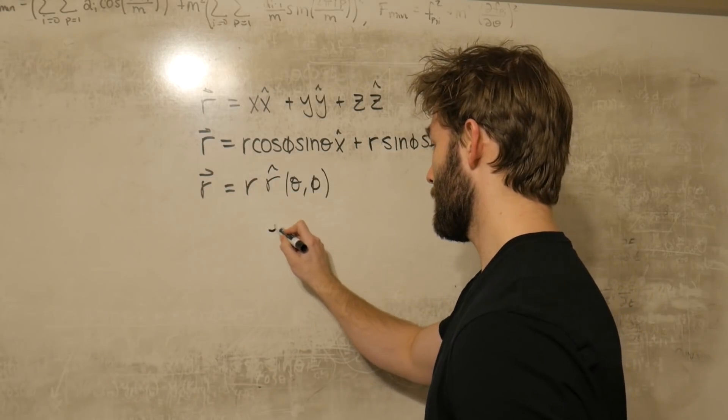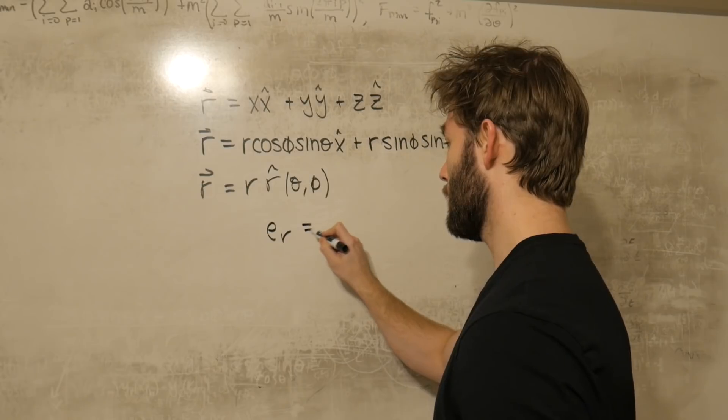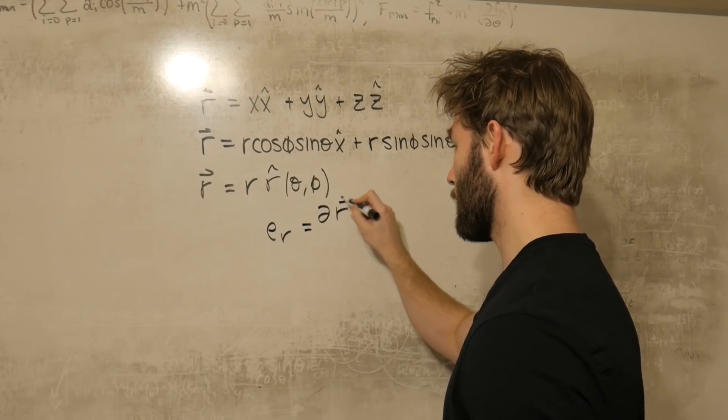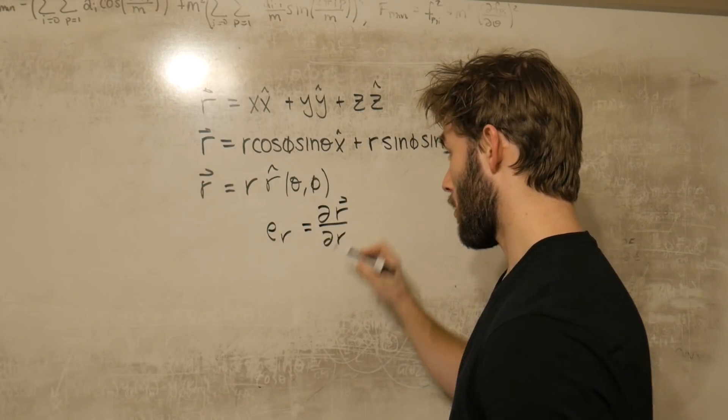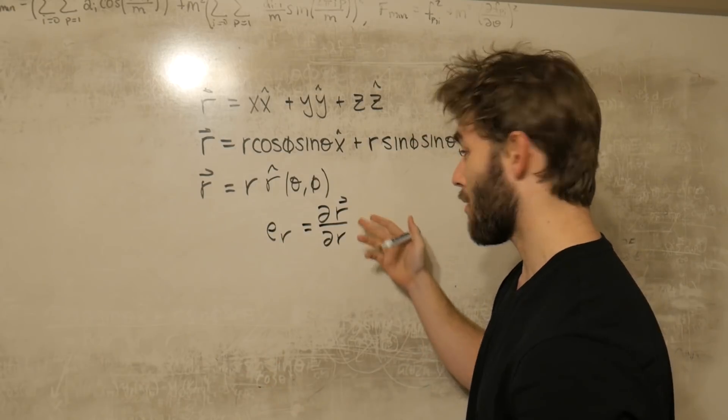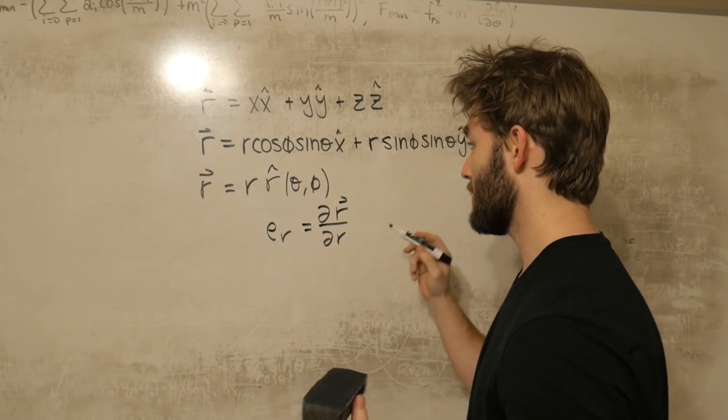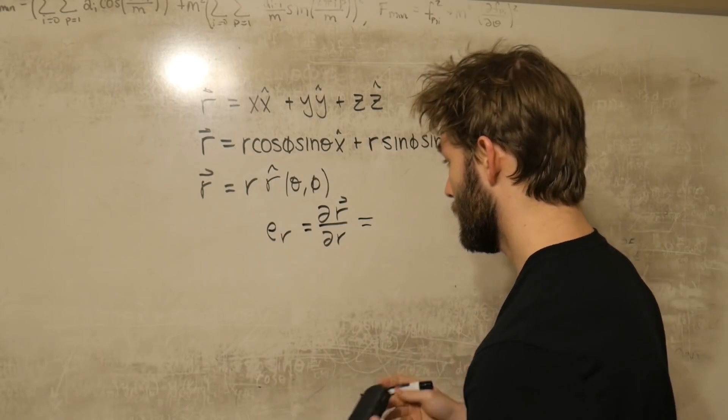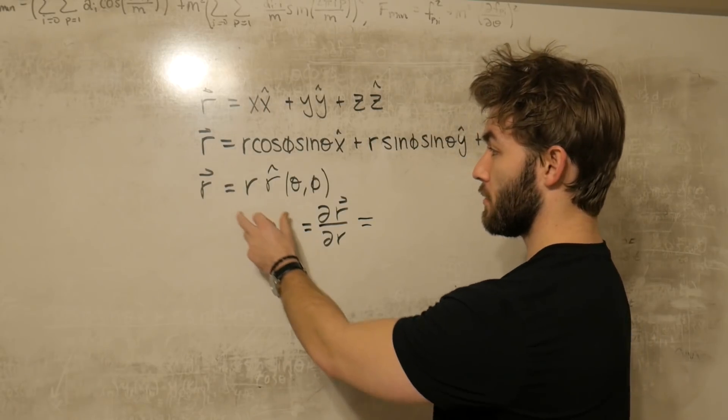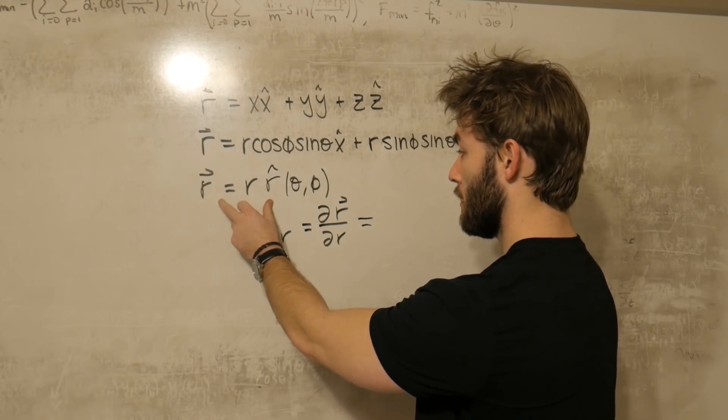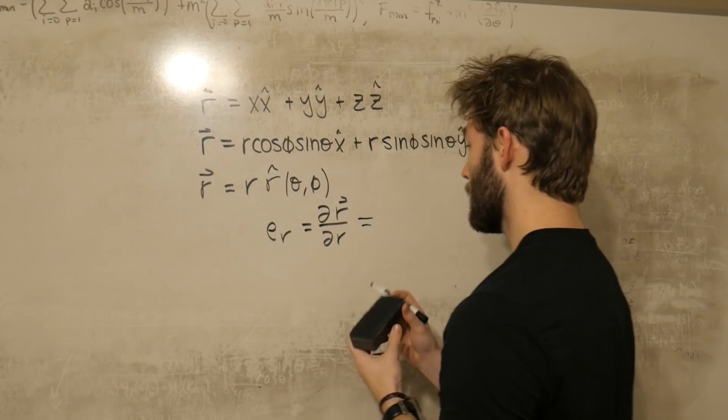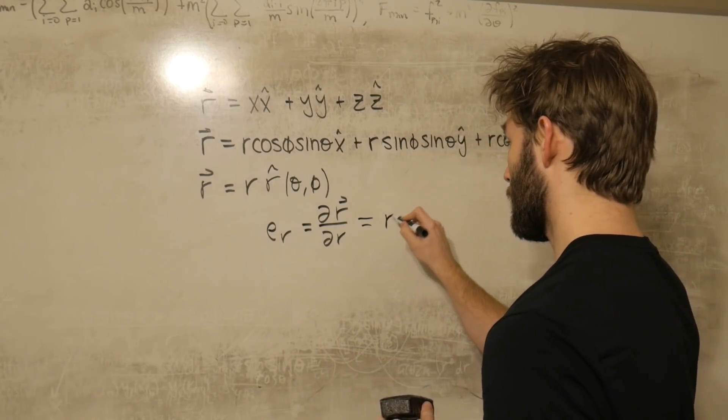So let's see what happens if we define some vector, e sub r, as a change in this r vector with respect to r. The notation's terrible because it's r and r, but let's just see where this takes us. If we do that, what we end up doing is we take the derivative of this vector here with respect to the parameter r. And that's just equal to our r hat.